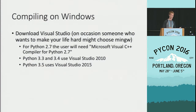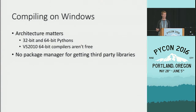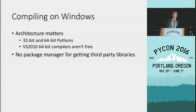On Windows, you need to download Visual Studio. For Python 2.7, the user will need the Microsoft Visual C++ compiler for Python 2.7. For Python 3 and 3.4, you'll use Visual Studio 2010, and for Python 3.5, Visual Studio 2015. Architecture also matters — there are 32-bit and 64-bit versions of Python on Windows, and those require compilers of the corresponding architecture. Visual Studio 2010's free edition does not come with the 64-bit compilers, and there's no package manager at all.